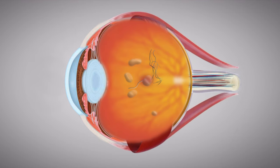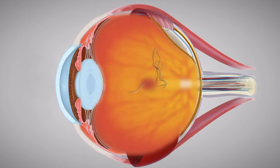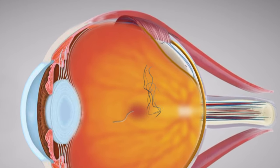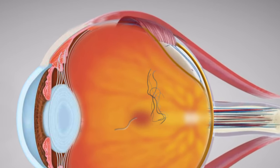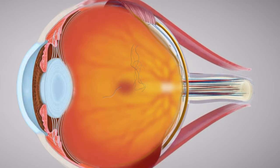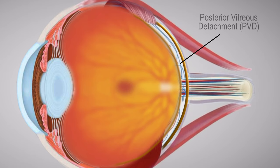The fluid pockets may collapse, causing the vitreous to shrink and pull away from the retina. When this happens, the pulling mechanically stimulates the retina and triggers light flashes in the peripheral vision. When the vitreous body completely separates from the retina, this is known as posterior vitreous detachment or PVD.